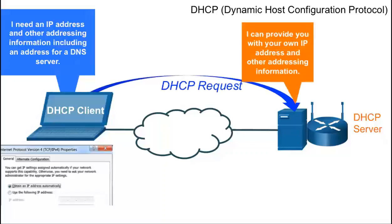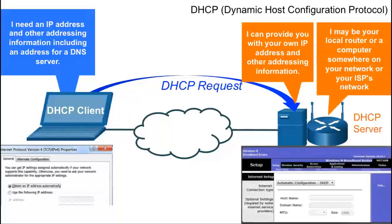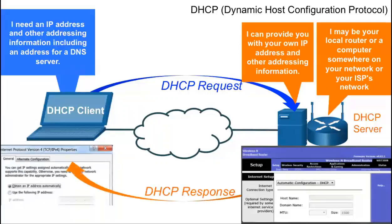The DHCP client sends a DHCP request message asking the DHCP server for this information. The DHCP server may be a local router or a server computer. The DHCP server will then respond with the appropriate addressing information.